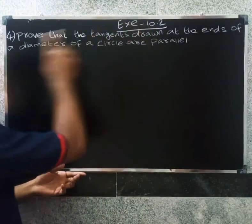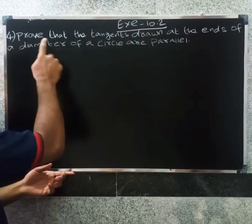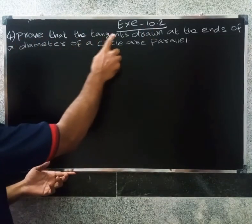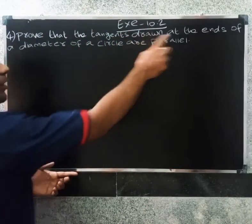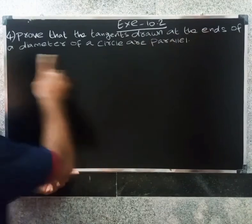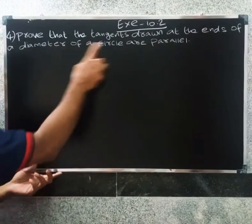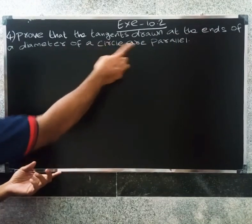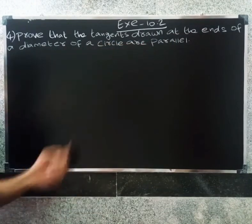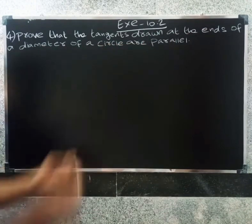We need to prove that the tangents drawn at the ends of a diameter of a circle are parallel.